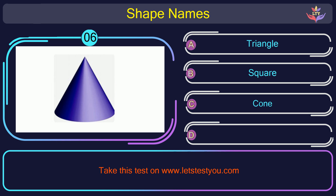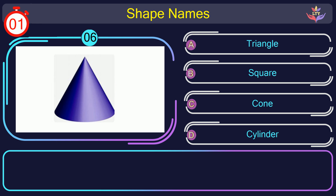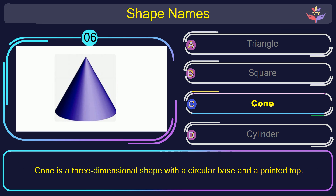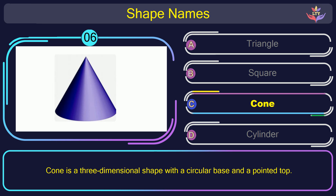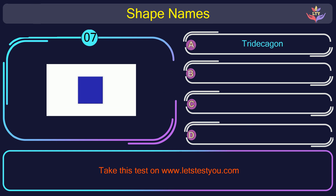Question number 6. Can you name the shape you see in this picture? The correct answer is option C. Cone. Cone is a three-dimensional shape with a circular base and a pointed top.